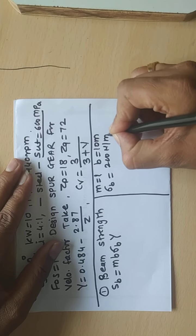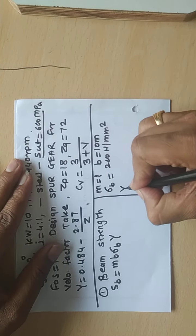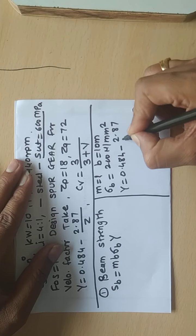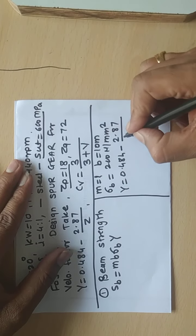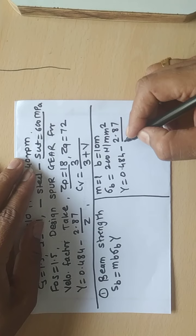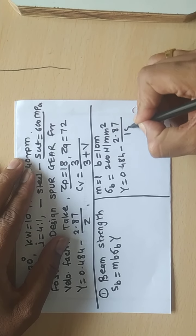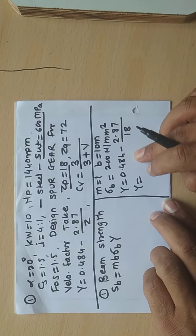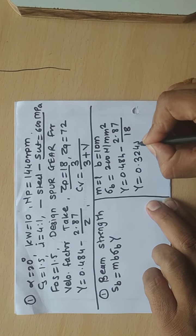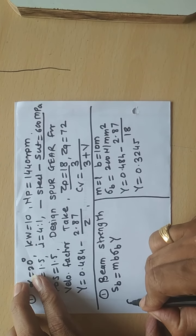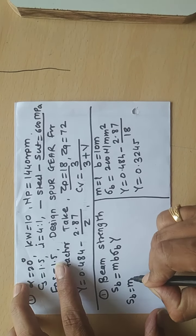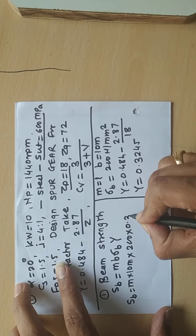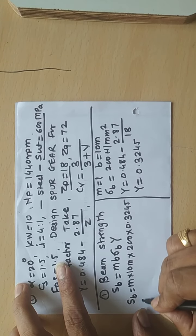Sigma B, the permissible bending stress, is SUT upon 3. SUT is 600, therefore σB = 200 N/mm². For Y, using the equation 0.484 minus 2.87 upon Z, consider the number of teeth on the pinion because both gears are the same material — pinion is weaker. With Z = 18, Y = 0.3245.